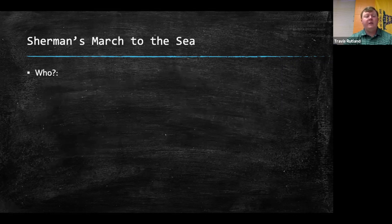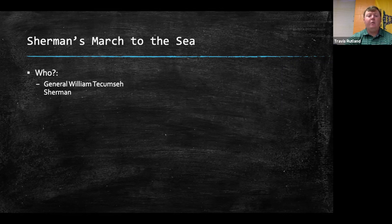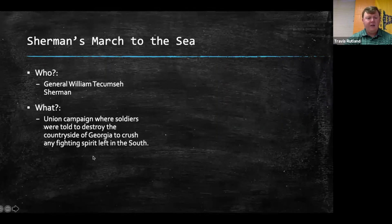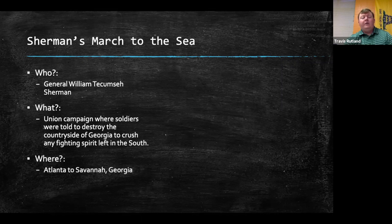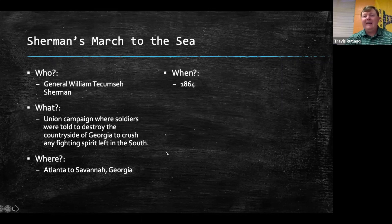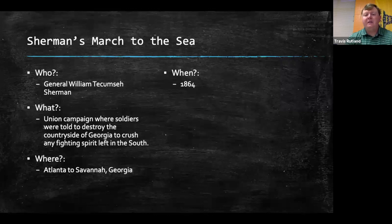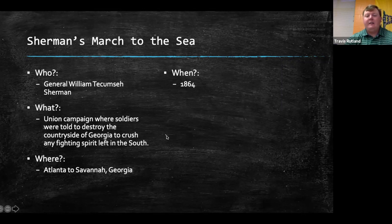The last topic is Sherman's March to the Sea. General William Tecumseh Sherman led the Union troops. This was a Union campaign where soldiers were told to destroy the countryside of Georgia to crush any fighting spirit left in the South — burning cotton fields, destroying railroads, and laying waste to Georgia. This took place everywhere between Atlanta and Savannah, Georgia, in 1864, spread out over several months.